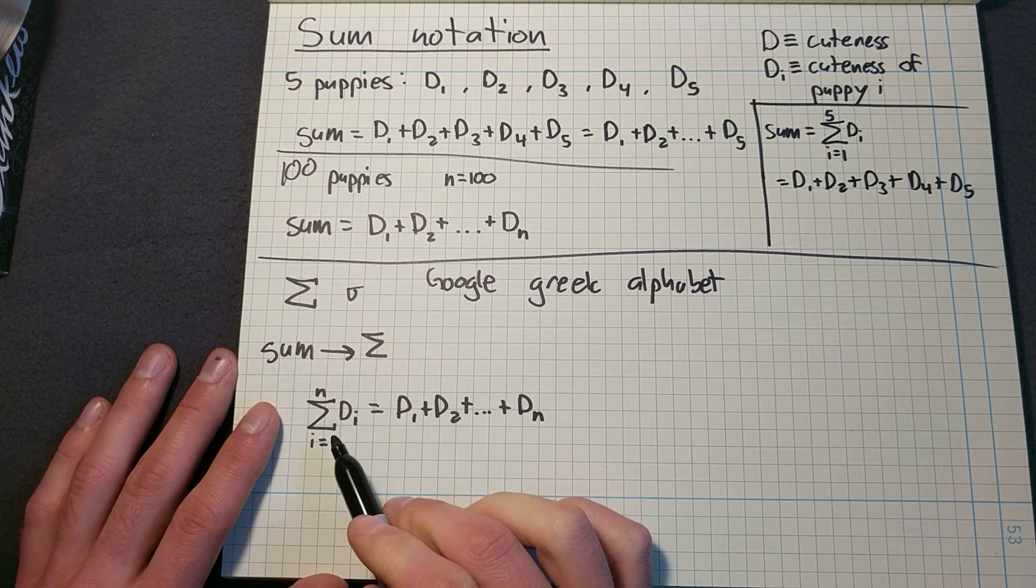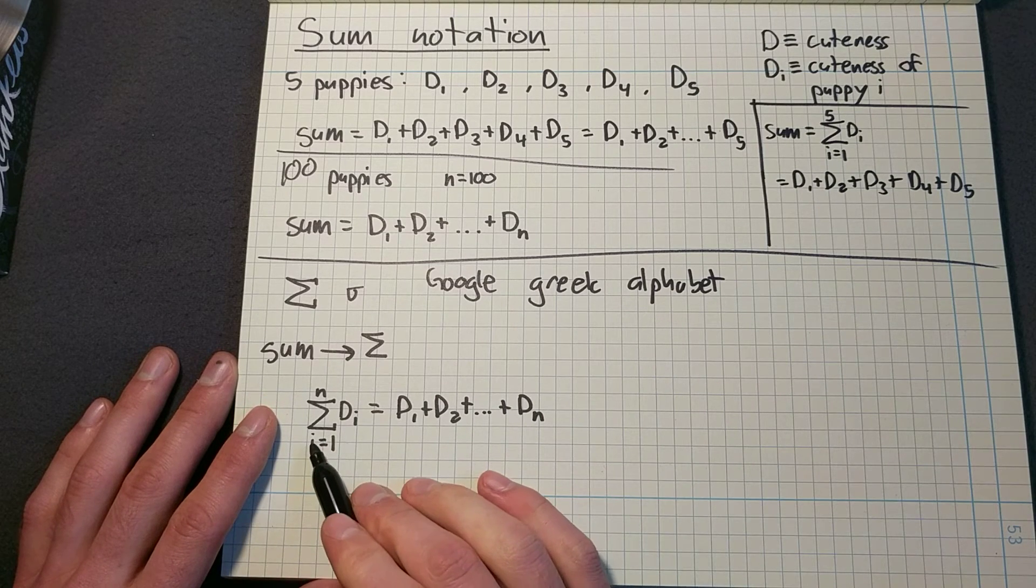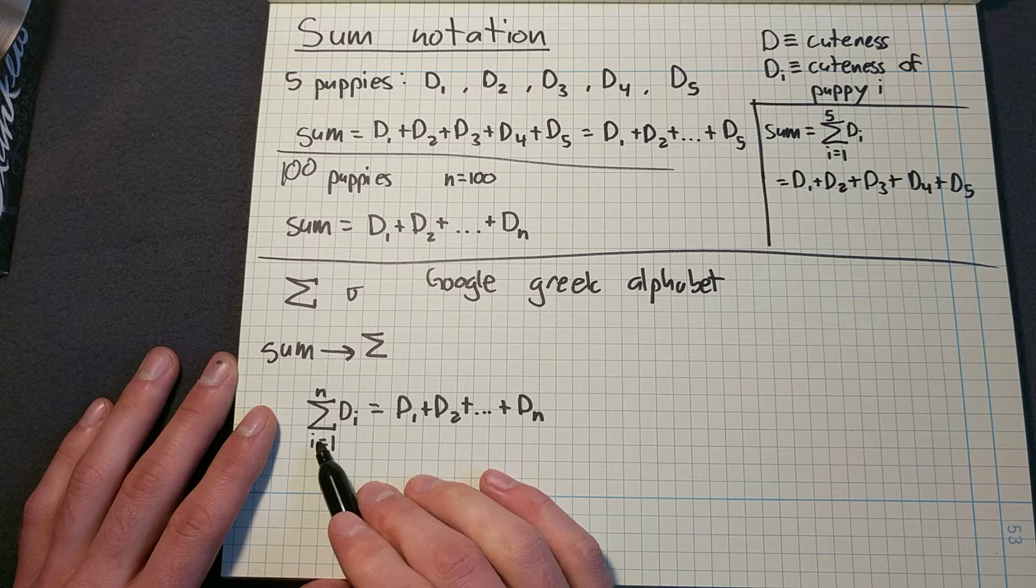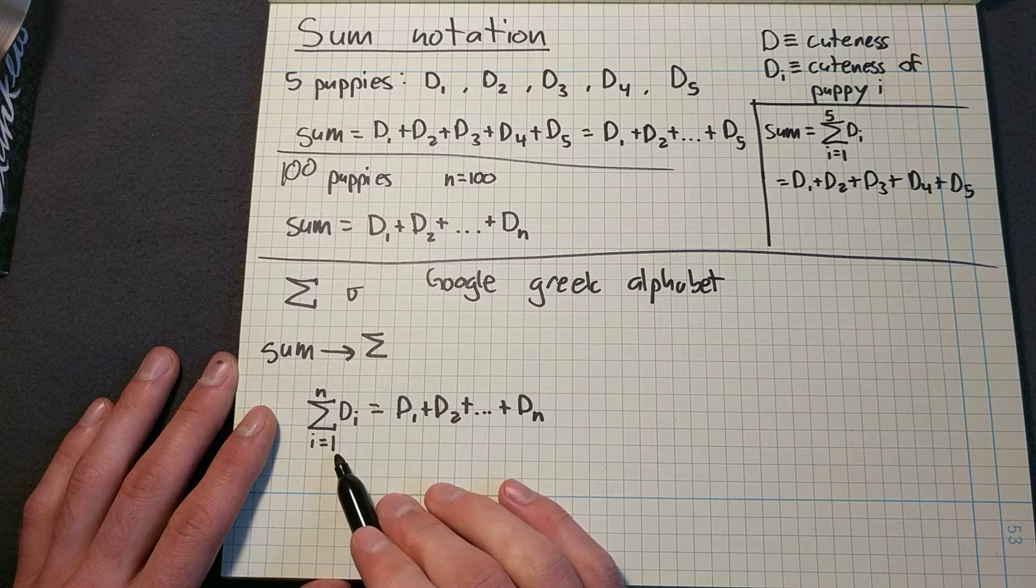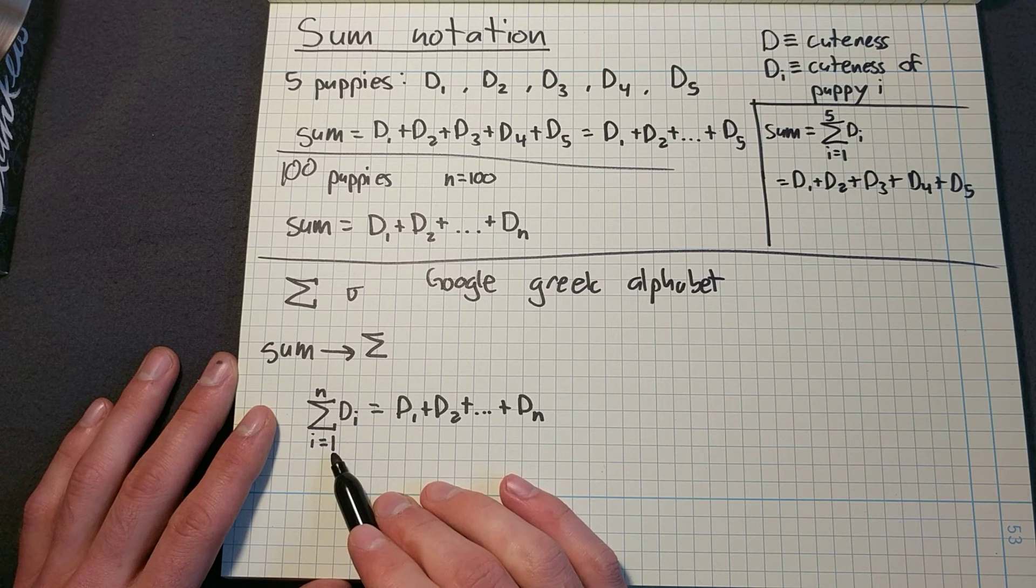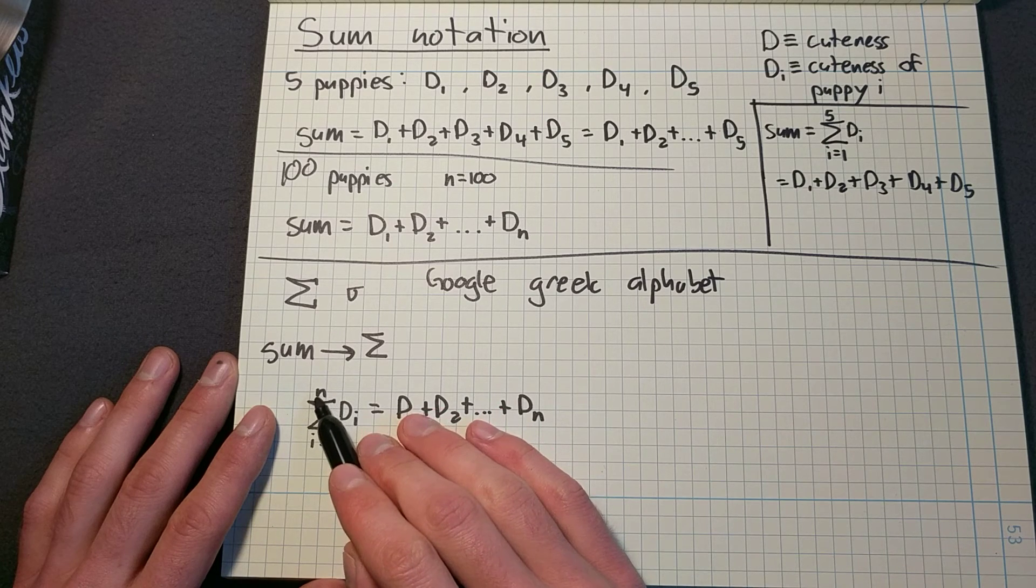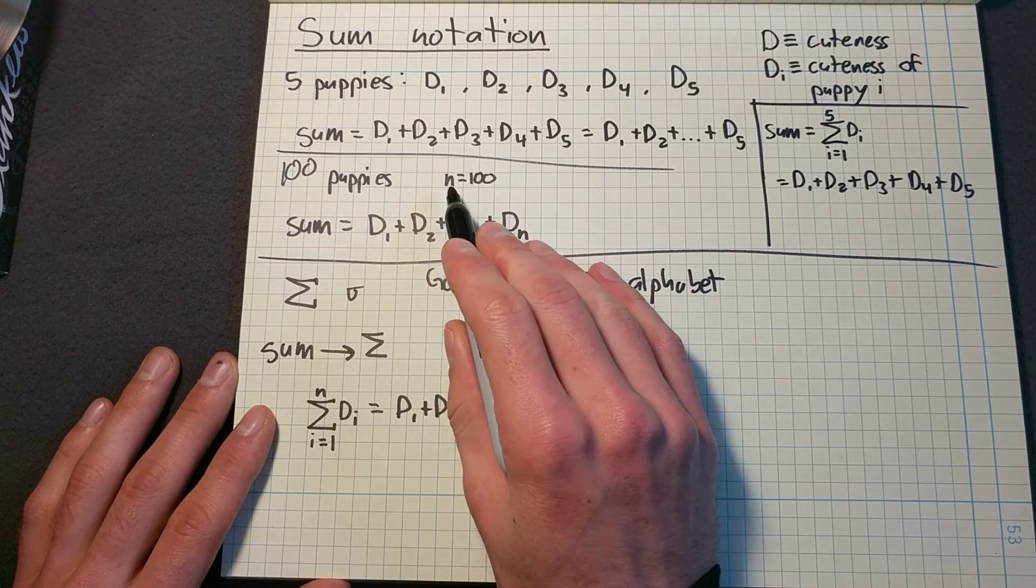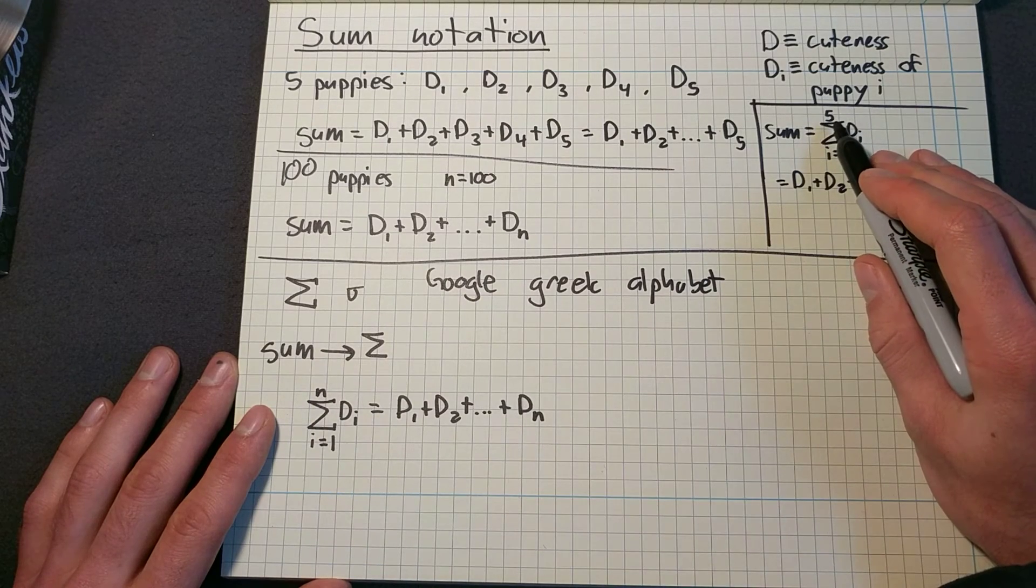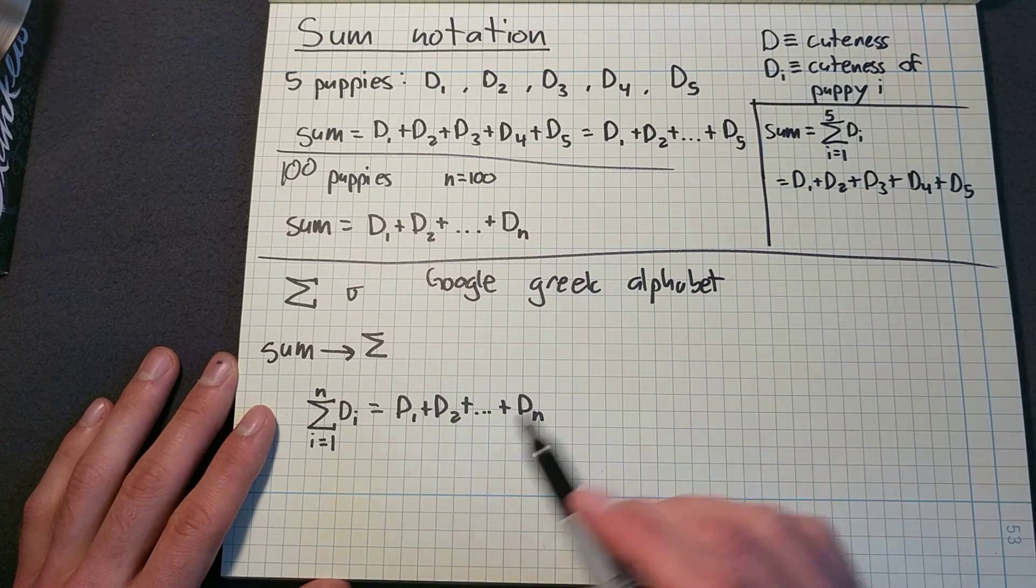So this sigma will almost always have an I or some other letter equals to some integer. These always have to be integers. And then at the top, it will either be a variable like N or it will be an integer like five.